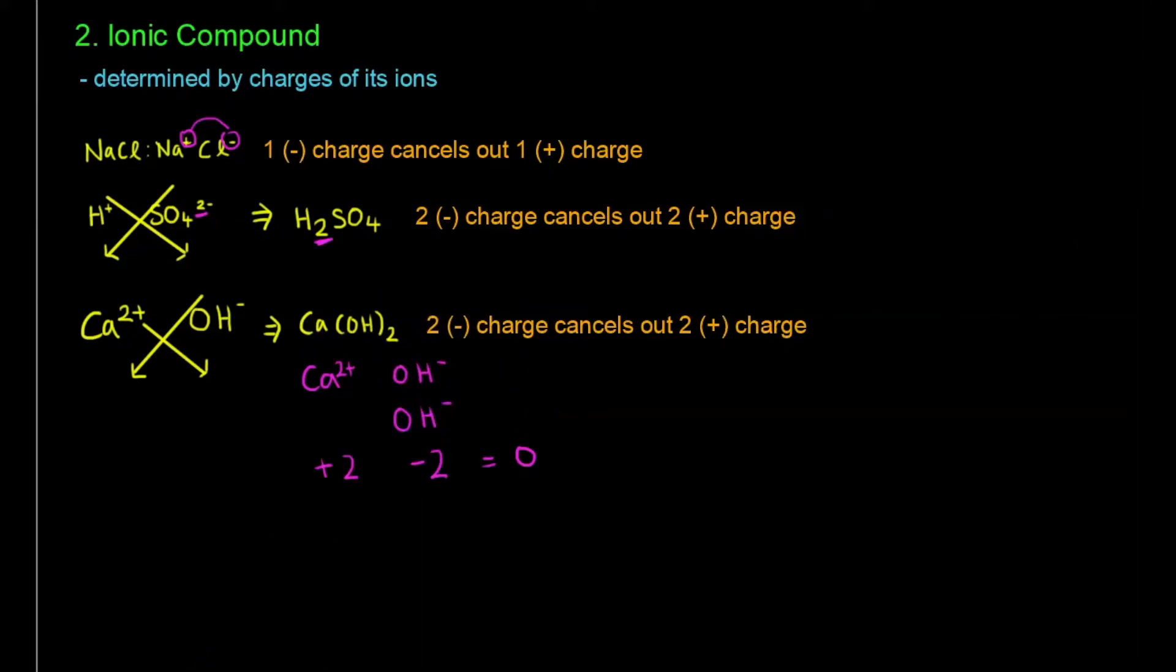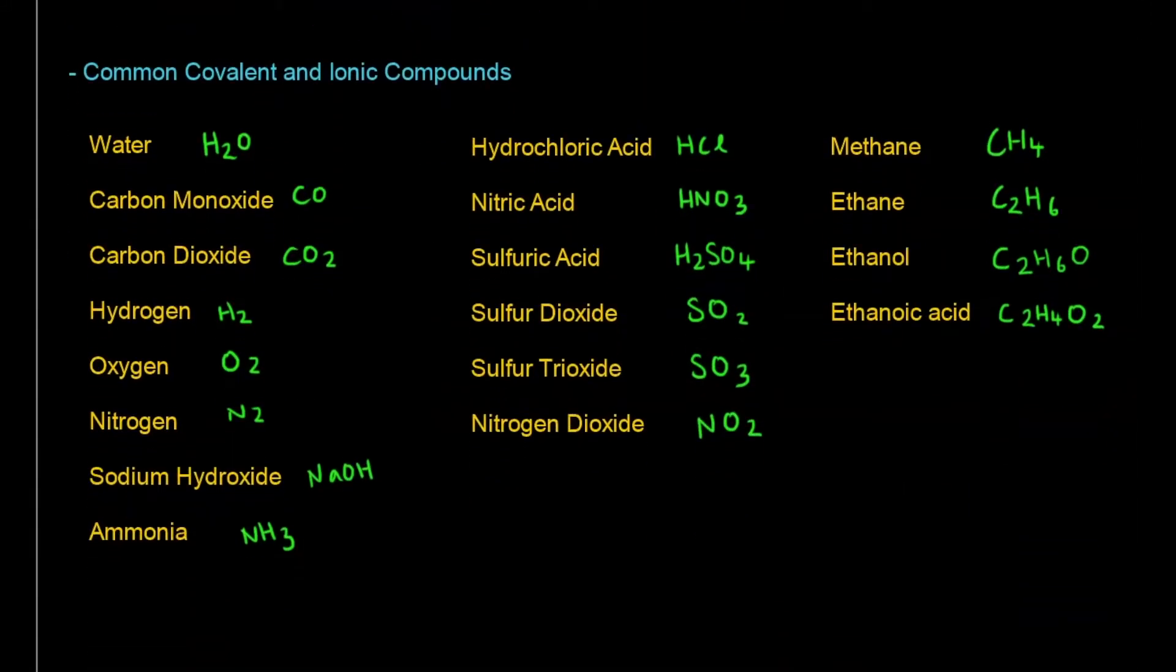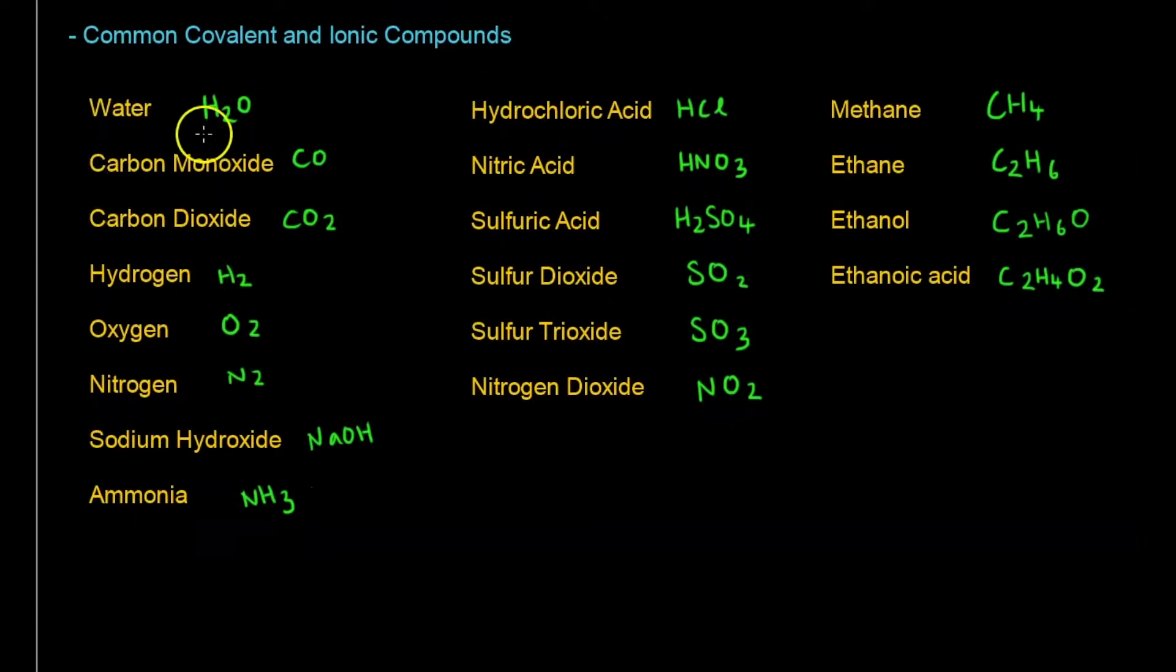Next we move on to a list of compounds that we have to know in our syllabus. First of all, we have to know water, it's H2O. Carbon monoxide and dioxide is CO and CO2 respectively. Hydrogen, oxygen, nitrogen, all these are H2, O2, N2. And sodium hydroxide is Na+ and OH-, so together they form NaOH. Ammonia is a gas, NH3.